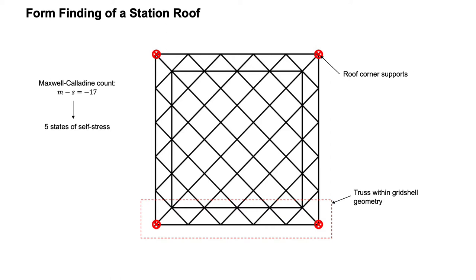The two-dimensional grid chosen consisted of mostly quadrilateral panels, as shown here. The four corners of the grid were selected as the support locations. The outer ring of elements was fully triangulated to allow the edge of the grid to span to the four support locations. This trussing action occurs within the grid shell and is not a resisting frame. We can observe here that the Maxwell-Calladine count gives n-s equal to negative 17, which implies five fully symmetric states of self-stress.